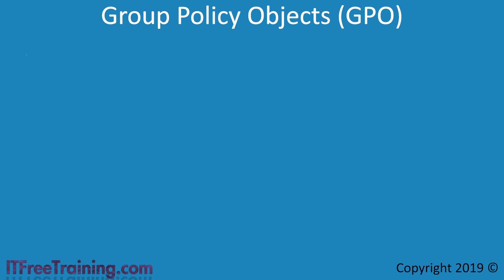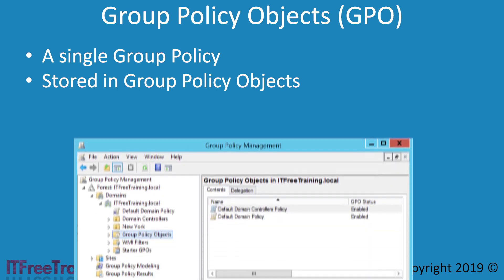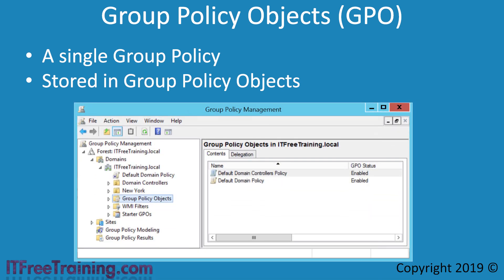When using group policy, you will hear the term Group Policy Object or GPO mentioned a lot. A GPO is basically a single group policy. The GPO is stored in the container Group Policy Objects. If you have a look at Group Policy Management, there is a container called Group Policy Objects. In this container, you will see all group policy objects that have been created.